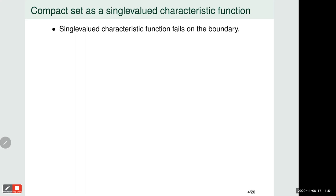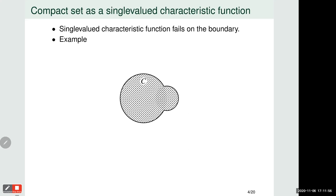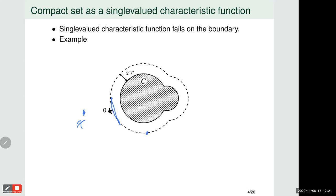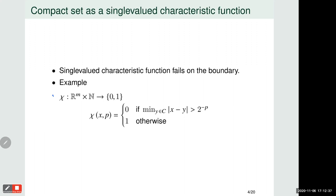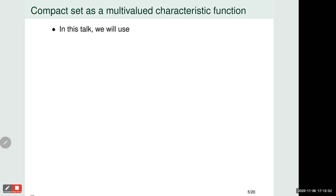As an introduction, let's review why the single-valued characteristic function fails to represent a compact set. If we have a compact set, somebody may want to put a boundary and check if a requested point x is outside this boundary or not. But this strategy fails because if we put x exactly on the boundary, then it is undecidable due to the equality problem. This is the formal notation of the characteristic function I explained — this single-valued function fails on the boundary.